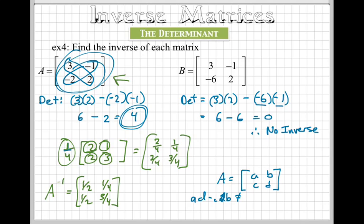If that does not equal zero, then that has an inverse matrix. And so if it has an inverse matrix, if it does not equal zero, then you can take the determinant, which is A times D minus C times B.